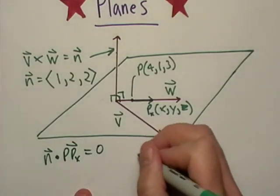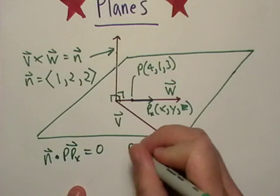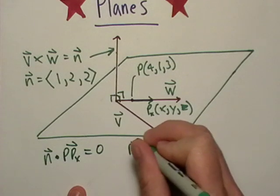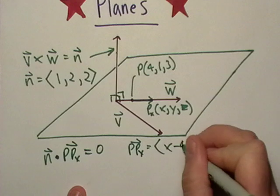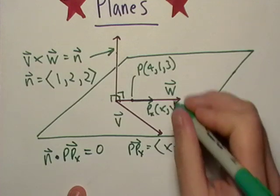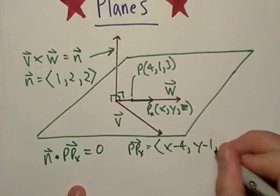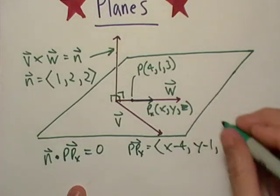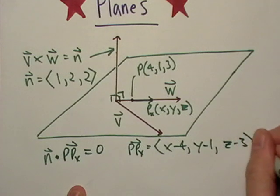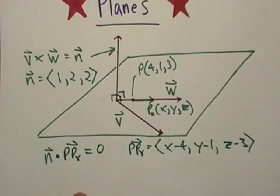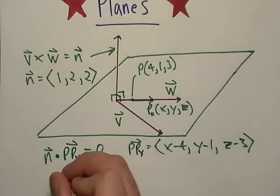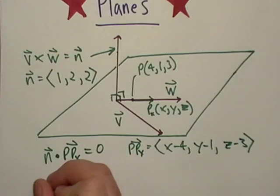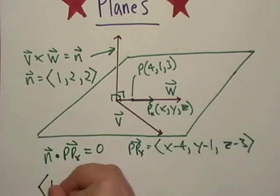The vector P-P_x is going to be (x − 4, y − 1, z − 3), using the known point (4, 1, 3). And I'm going to dot that with vector N.